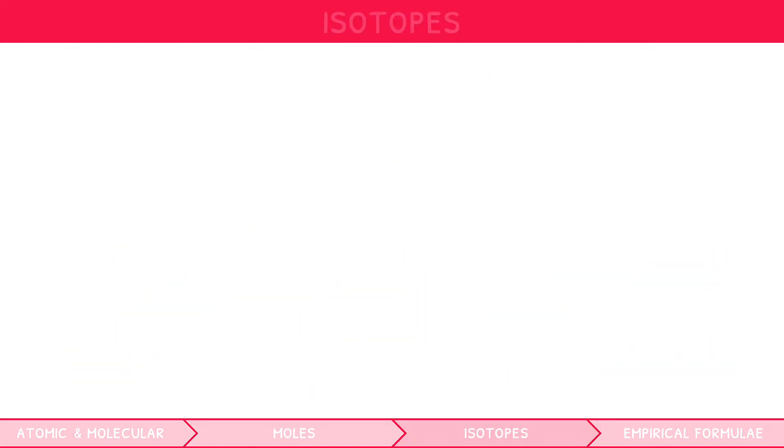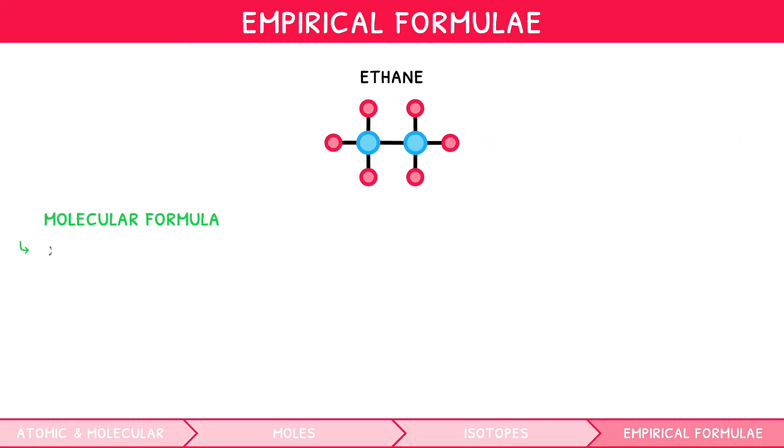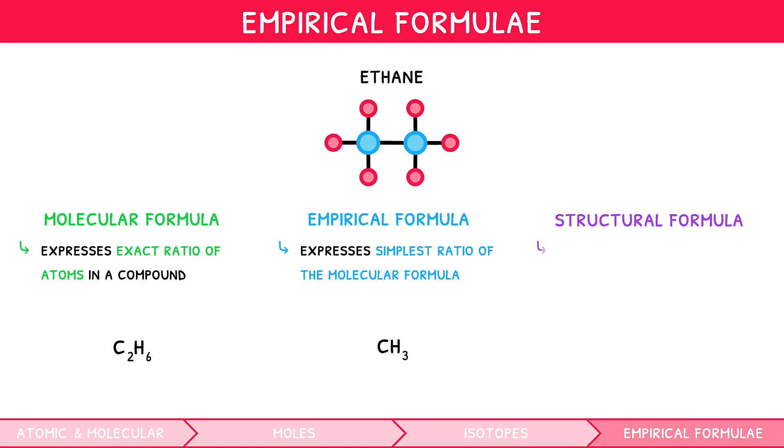As previously mentioned, compounds are chemically bonded in fixed ratios. There are several different formulas that can be used to describe a compound. Let's use the example of ethane. A compound's molecular formula expresses these exact ratios by showing how many atoms of each type are within a compound. For ethane, there are two carbons and six hydrogens, so the molecular formula is C2H6. A compound's empirical formula expresses the simplest whole number ratio of this molecular formula. For example, we can simplify C2H6 to CH3. A compound's structural formula shows the physical arrangement of atoms in space. For ethane, it would look like this.